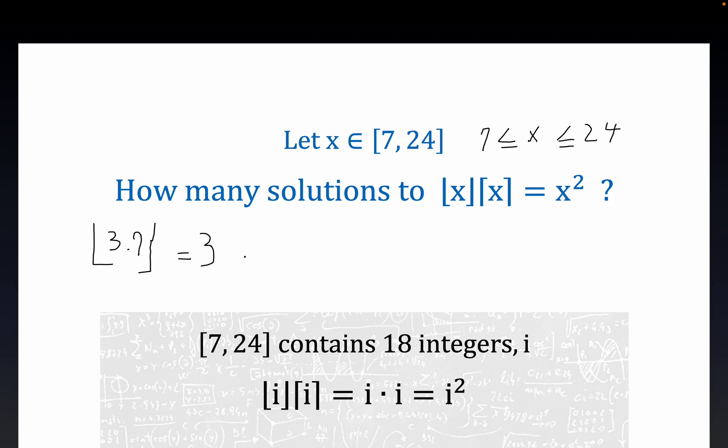Similarly, the ceiling of 3.7 is equal to 4. That's the least integer that is greater than this input. So again, floor, ceiling.